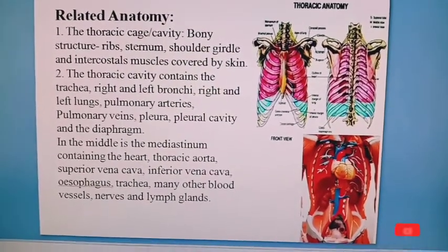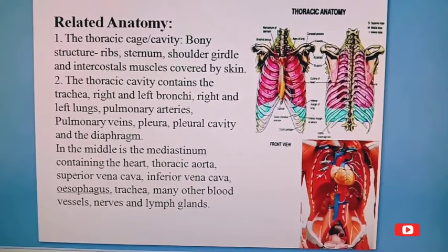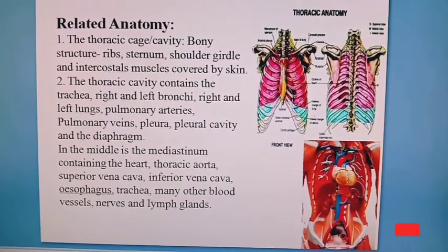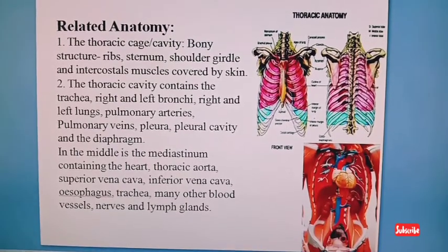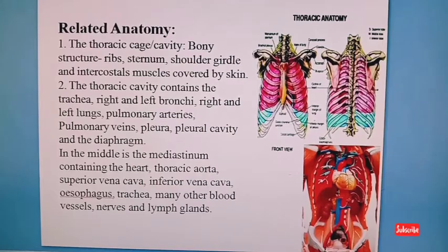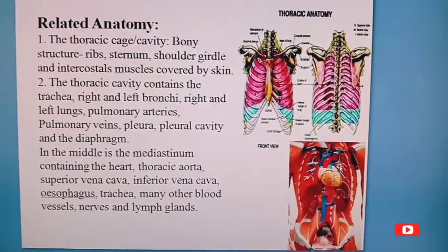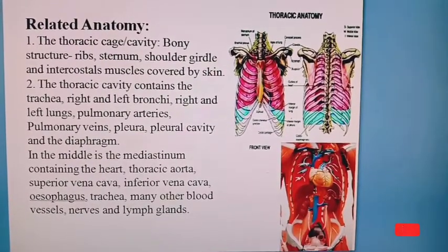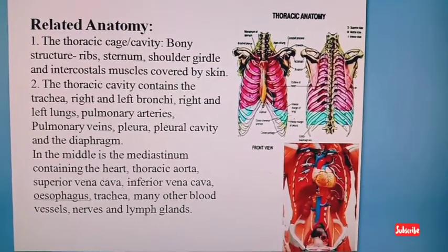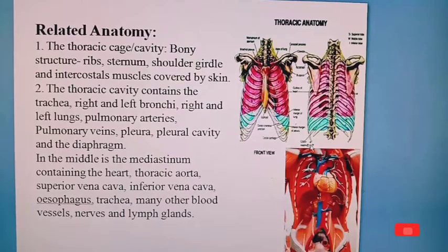The underlying structure of the thoracic cavity contains the trachea, right and left bronchi, right and left lungs, pulmonary arteries, pulmonary veins, pleural cavity, diaphragm, and mediastinum. These are all the related anatomy of the chest wall and its underlying structure.